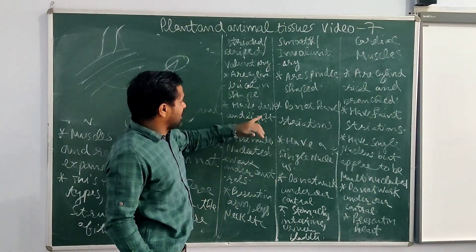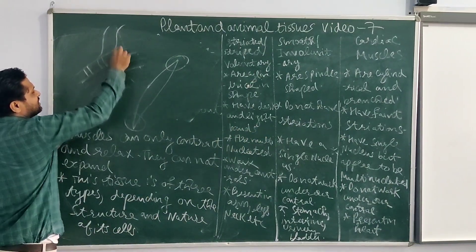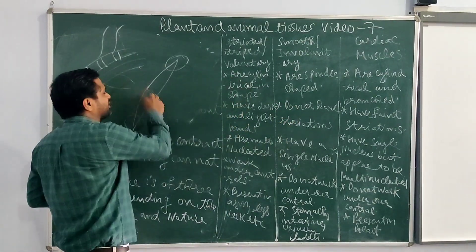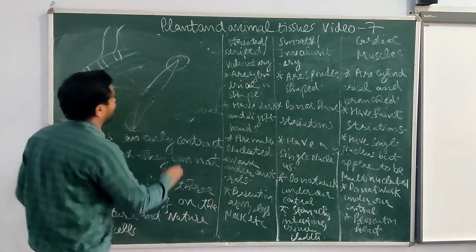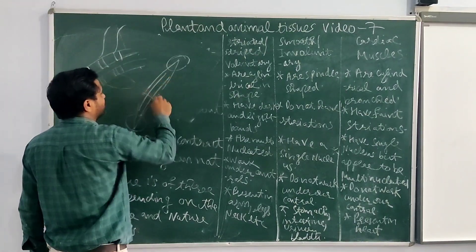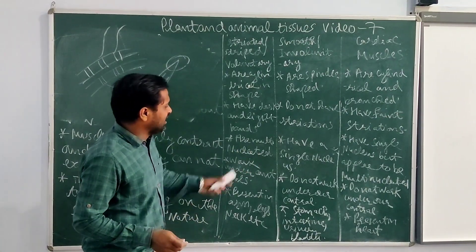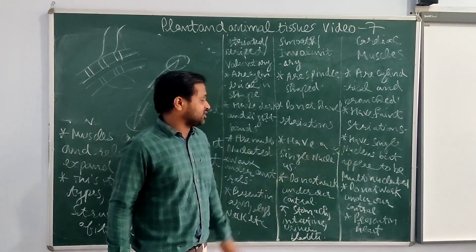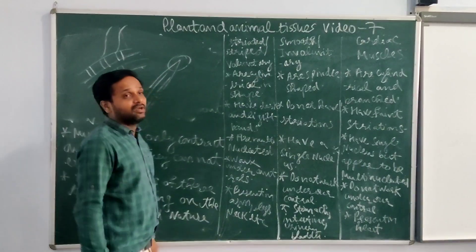Striated muscles have dark and light bands — strips are visible. Smooth muscles do not have striations, while cardiac muscles have faint striations — a very light one, difficult to see. Striated muscles are multi-nucleated in nature. Smooth involuntary muscles and cardiac muscles have a single nucleus, though cardiac muscle appears to be multi-nucleated.